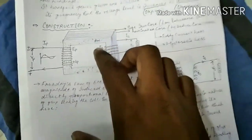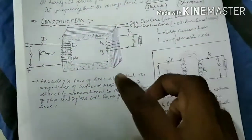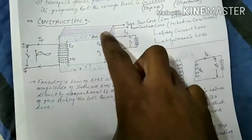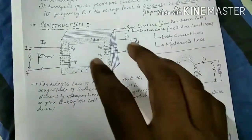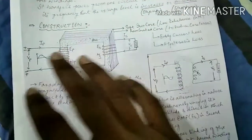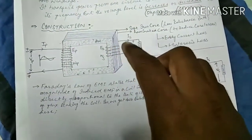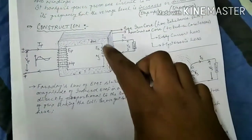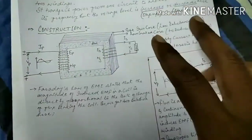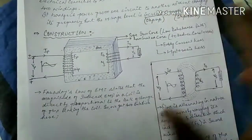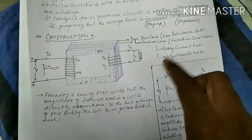For construction, mainly three parts are required: first is the core material, and second is the two windings. For the core material, we use soft iron core because it gives a low reluctance path, so the maximum flux produced will link with the secondary side. We use laminated sheets for the core — thin laminated sheets — to reduce core losses. There are two types of losses in a transformer: copper losses and core losses. To reduce core losses we use laminated sheets. Core losses have two types: eddy current loss and hysteresis loss.